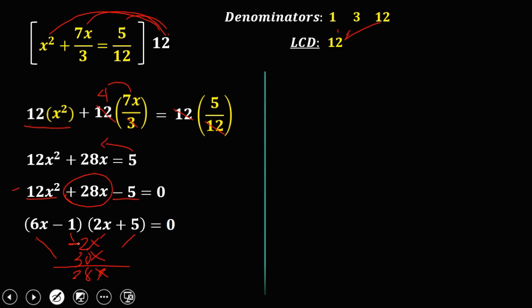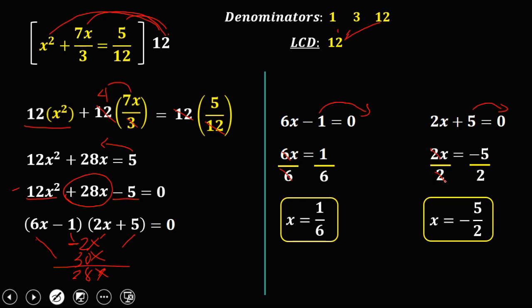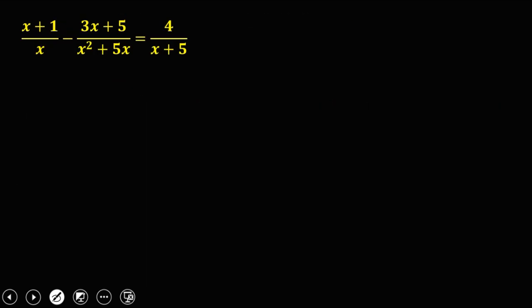Equate each factor to zero. For 6x minus 1 equals 0: transpose negative 1, divide both sides by 6, so x equals 1 over 6. For 2x plus 5 equals 0: transpose positive 5, divide both sides by 2, so x equals negative 5 over 2. These are the solutions: x equals 1/6 and x equals negative 5/2.